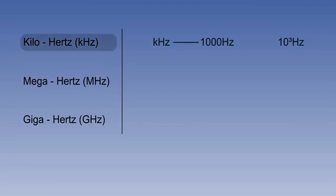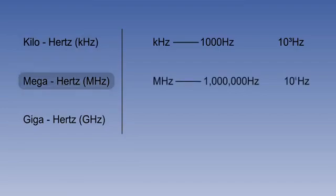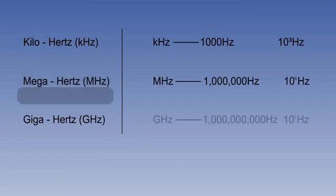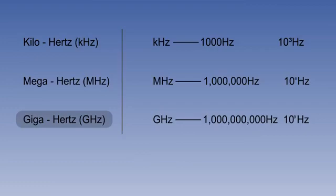Kilohertz are units of 1,000 cycles per second, that is 10 to the power of 3. Megahertz are units of 1,000,000 cycles per second, that is 10 to the power of 6. Gigahertz are units of 1,000,000,000 cycles per second, that is 10 to the power of 9.